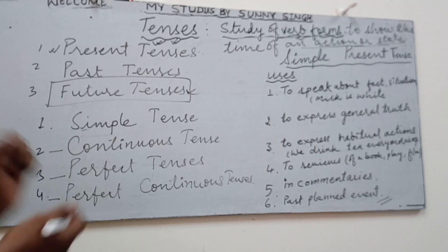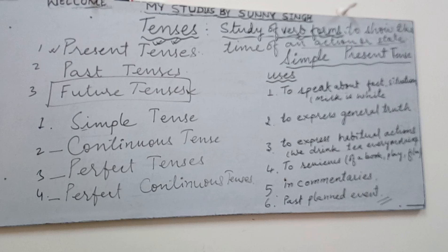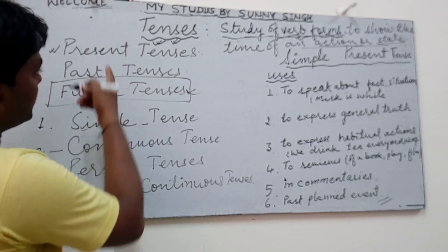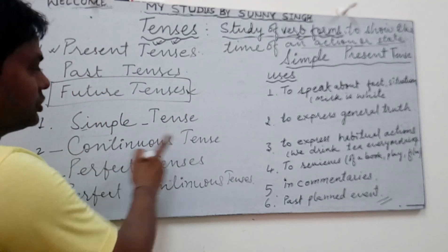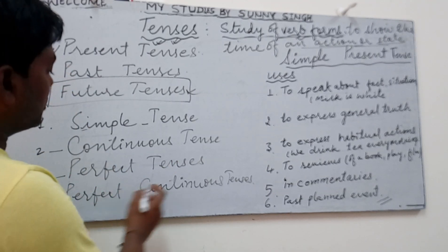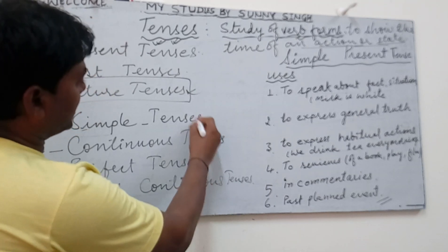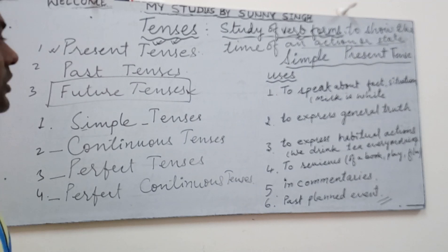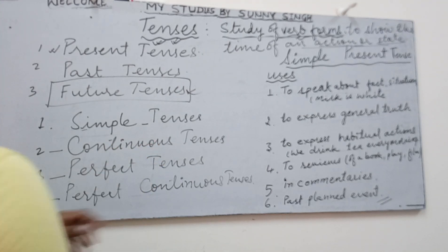When you study past tenses, add 'past' with all four forms. So the four forms of past tense are: simple past tense, past continuous tense, past perfect tense, and past perfect continuous tense. You can say one tense per day if you wish.